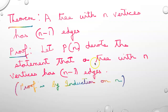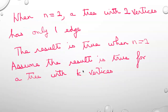Next theorem: a tree with n vertices has n-1 edges. We prove it by induction. Let P(n) denote the statement that a tree with n vertices has n-1 edges. When n equals 2, a tree with 2 vertices has only 1 edge. So the result is true when n equals 2.